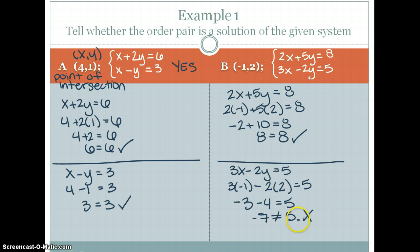Since it only works for one and not the other, the answer to B would be no. The point (negative 1, 2) is not a solution to this given system.